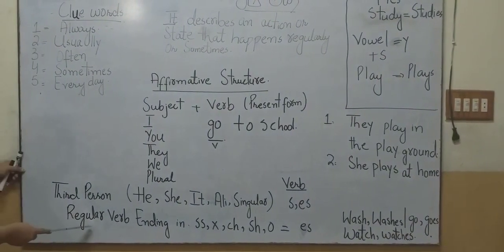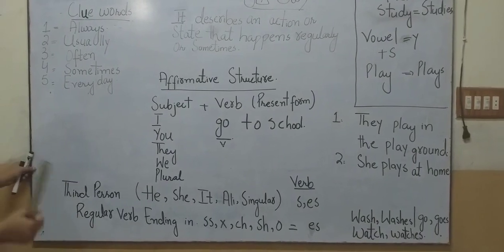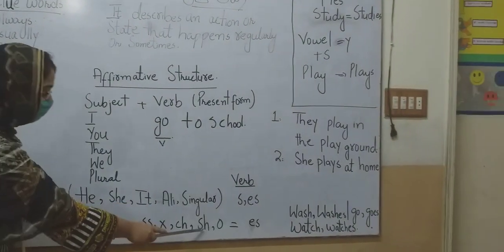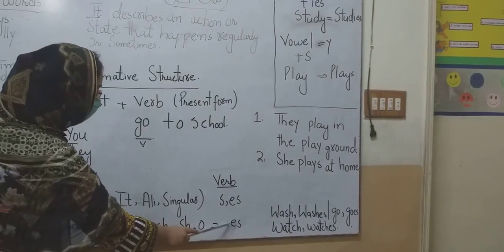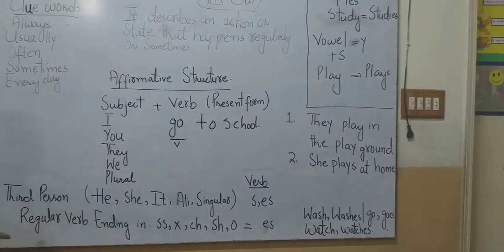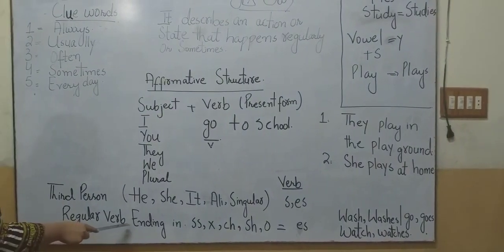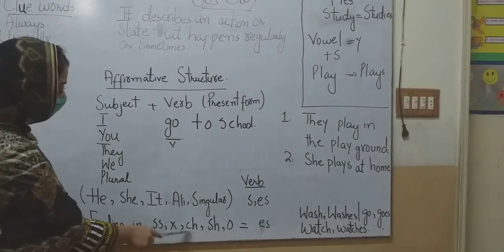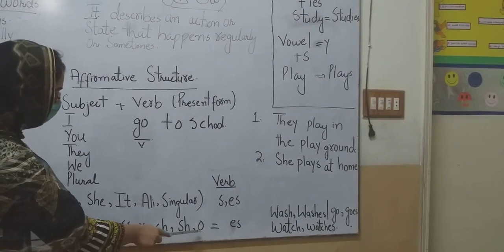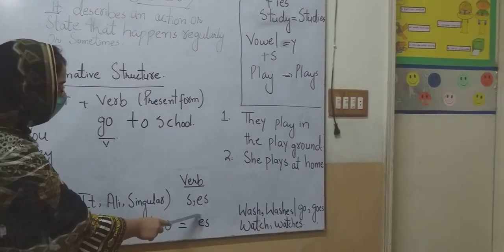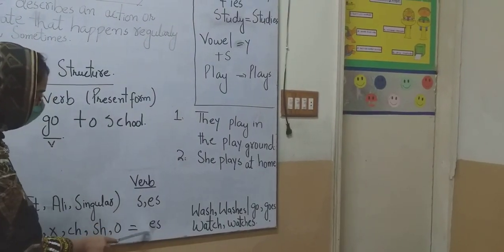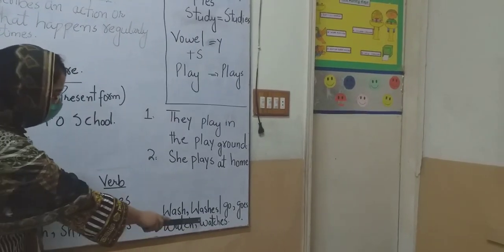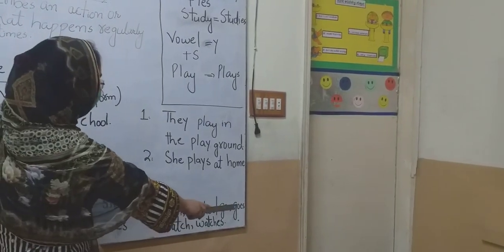For regular verbs ending in SS, X, CH, SH, or O, we will add ES to the verb. For example: wash → washes, watch → watches, go → goes.